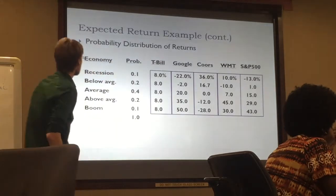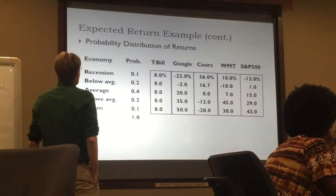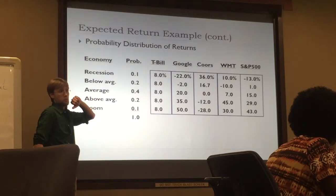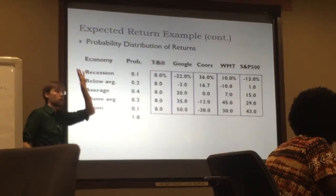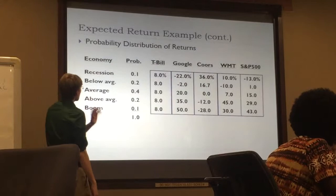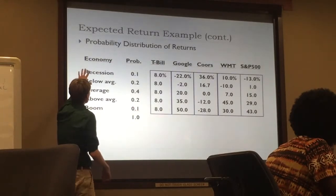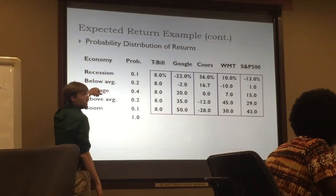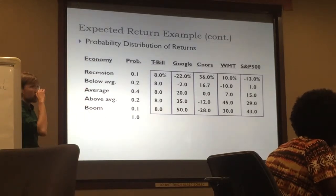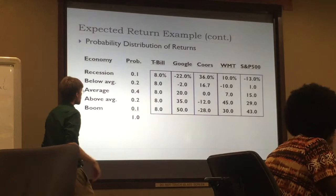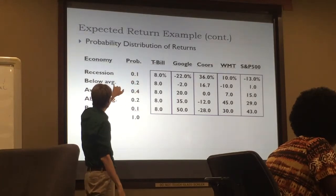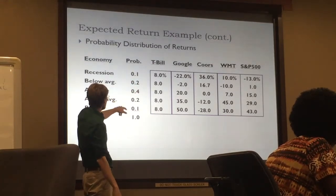Here is one set of ways the future could turn out. We have N equals five — five possible outcomes. Macroeconomically, it could be a recession, below average economy, average economy, above average economy, or a boom. The likelihoods are: 10% recession, 20% below average, 40% average, 20% above average, 10% boom. These probabilities sum to 100%, capturing everything. This is a symmetric distribution — bad outcomes mirror the positive outcomes.